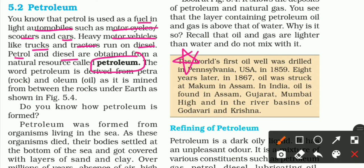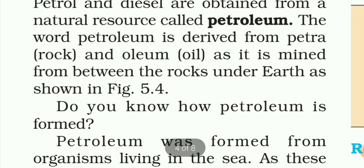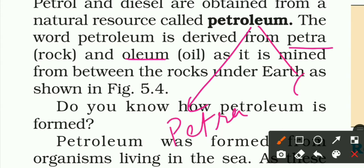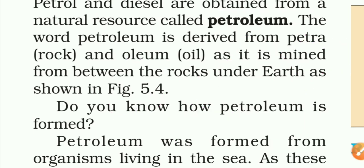Yahan se question puchha jata hai ki jo petrol aur diesel hai, ye kis se obtained kiya jata hai? Ye natural resource called petroleum se obtained kiya jata hai. The word 'petroleum' is derived from two words — 'petra' and 'oleum'. Petra ka matlab hota hai rock (chattane), aur oleum ka matlab hota hai oil. As it is mined from between the rocks and the earth, isi liye iska naam rakha gaya petroleum.